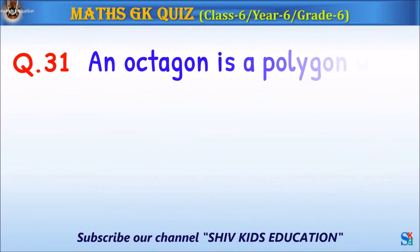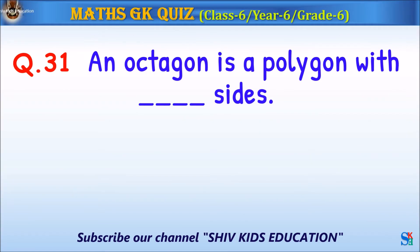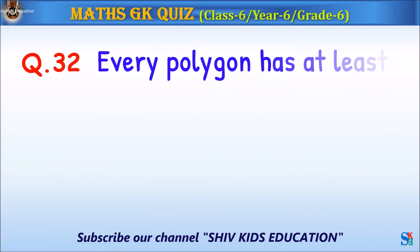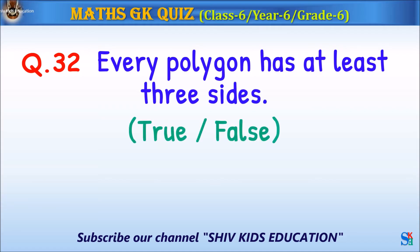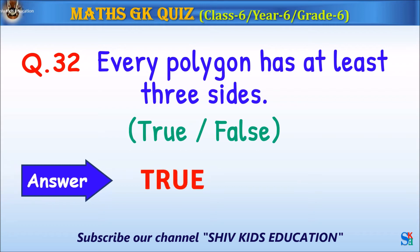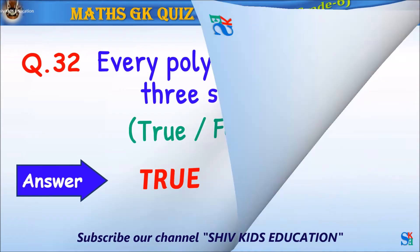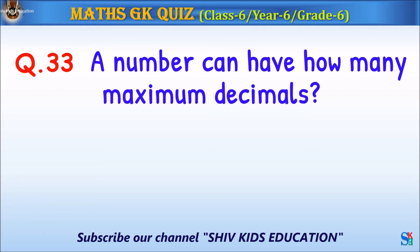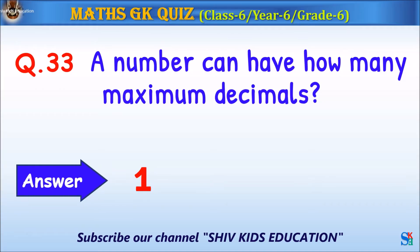Question 31: An octagon is a polygon with how many sides? The answer is 8. Question 32: Every polygon has at least 3 sides — true or false? The answer is true. Question 33: A number can have how many maximum decimal points? The answer is 1.